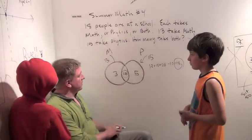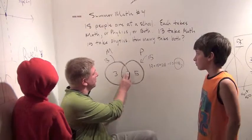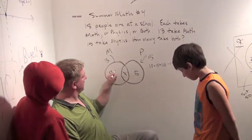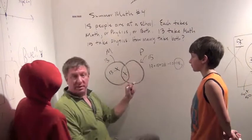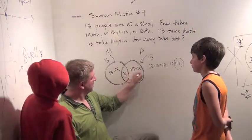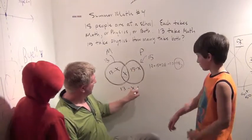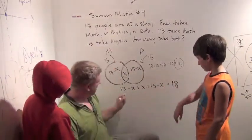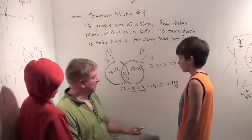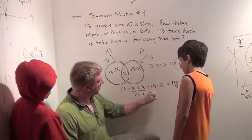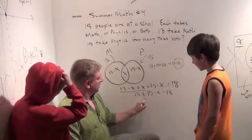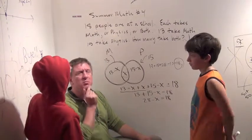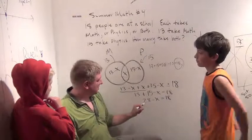The another math way I could do it is I could call this middle part X. I know 13 people take math. So what's this part over here? 13 minus X. I know 15 people take physics. That's 15 minus X. So I have to do 13 minus X plus X plus 15 minus X equals 18. What's 13 minus X plus X? It's just 13. 13 plus 15 minus X is 18. 28 minus X is 18. So 28 minus what equals 18? It's 10. So X equals 10. Just like you found.